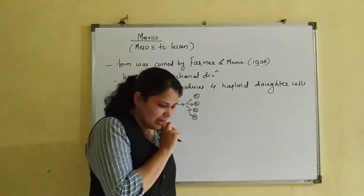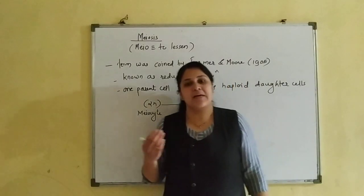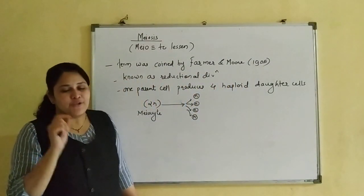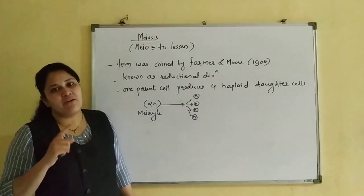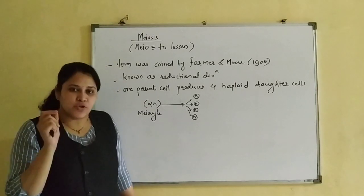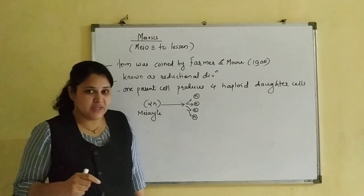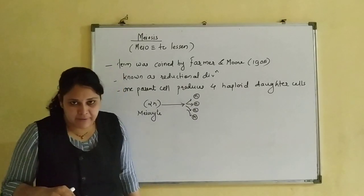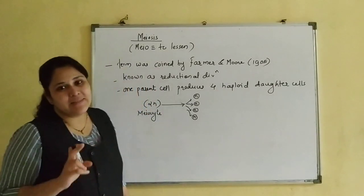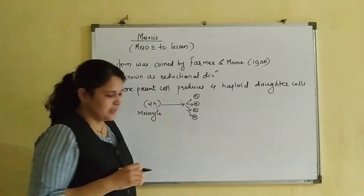In case of mitosis, one parent cell divides into two daughter cells - DNA content doubles, but chromosome number remains the same, because each daughter cell receives one chromatid out of two sister chromatids. So chromosome number is maintained. But in case of meiosis, the numbers are reduced, and all four daughter cells receive only a single set, making them haploid cells.